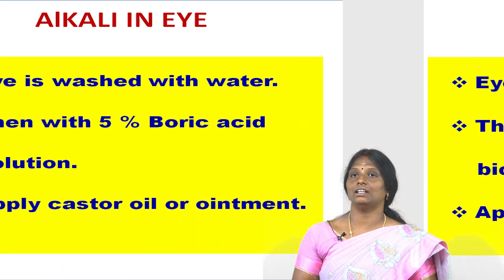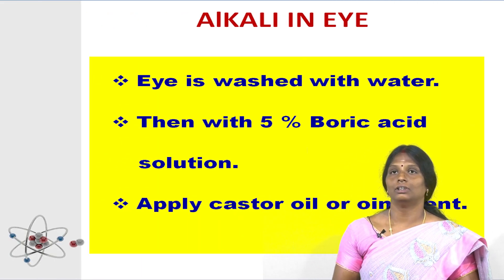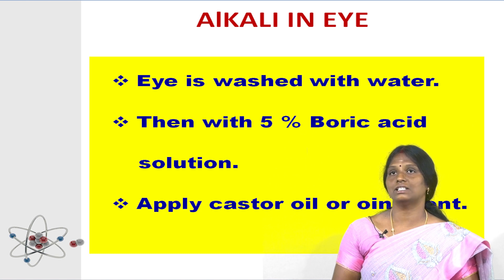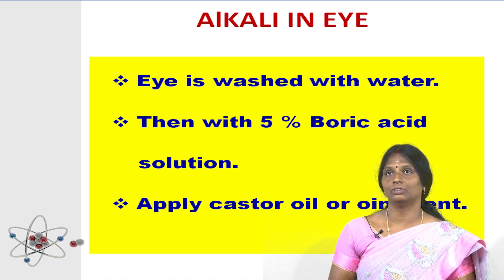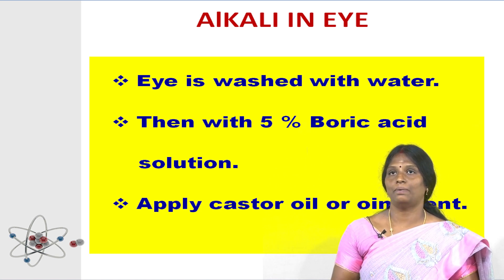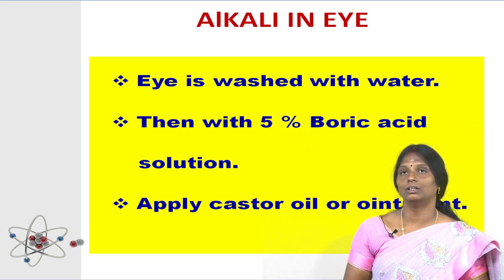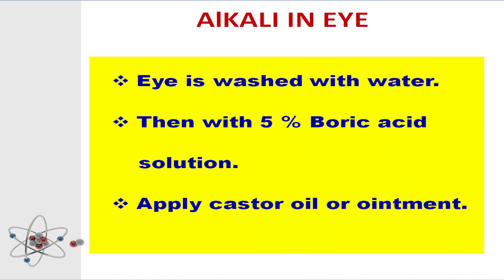Next, alkali in the eye. When alkali falls into your eye, the eye is washed with a lot of water. Then you have to apply 5% boric acid solution. By using this, we wash the eye with boric acid. After washing, a drop of castor oil or an eye ointment is applied. Then the person is taken to the doctor.